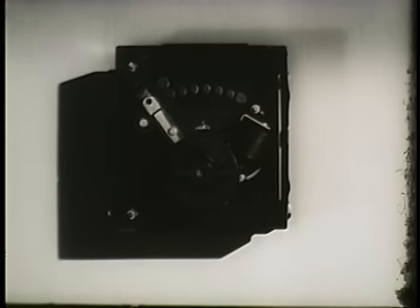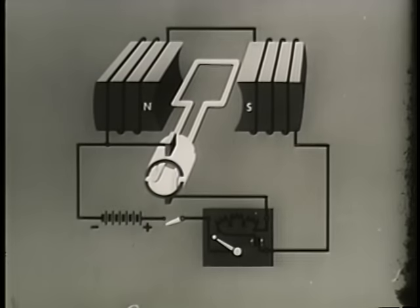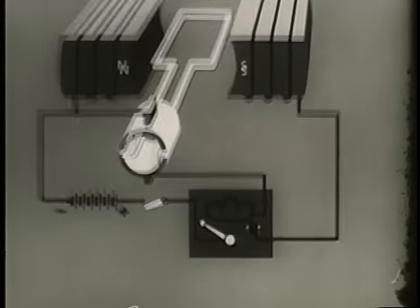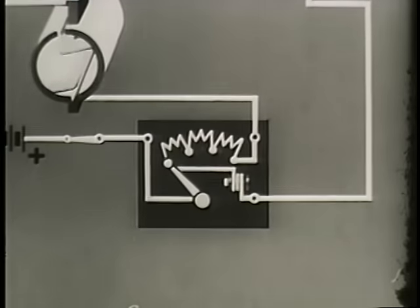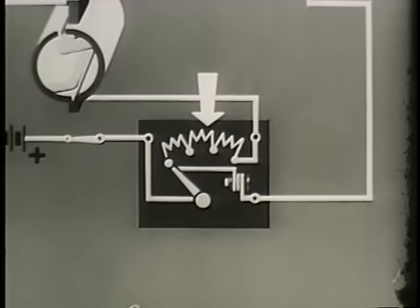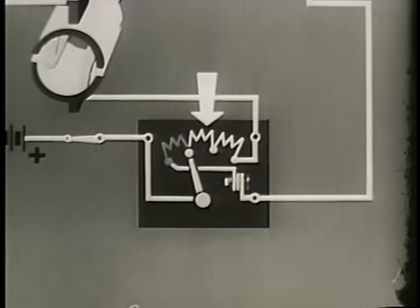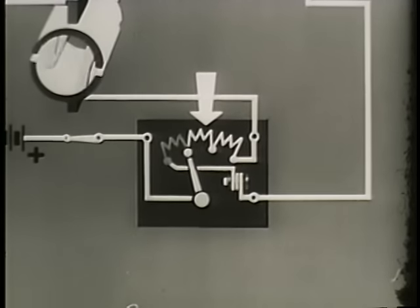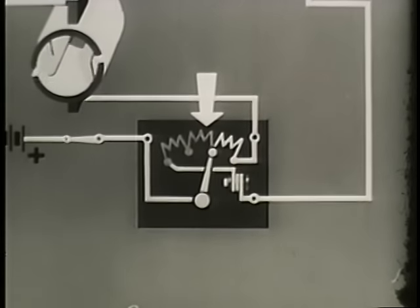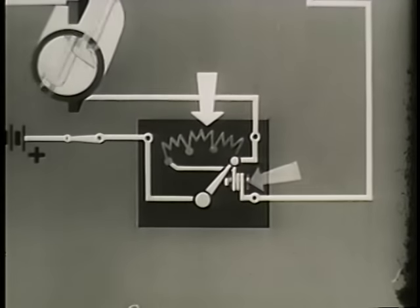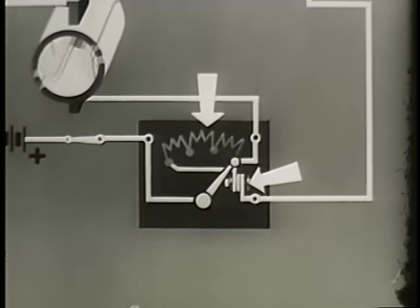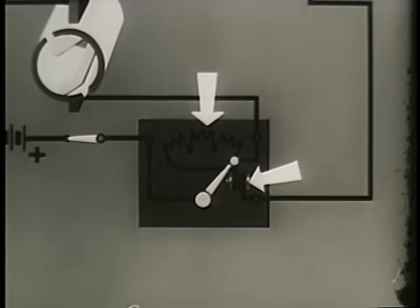Starting boxes are used with DC motors in order to avoid application of full current before the CEMF is built up. Here is a basic shunt motor with its starting box. In the starting position, the circuit to the rotor windings is closed through a series of large resistance coils. As the lever of the switch is moved, rotor speed and CEMF build up gradually and the resistance coils are subsequently cut out until running speed has been reached. The lever is held in the fully open position by an electromagnet. If for any reason the power should fail or the field coil open, the electromagnet becomes de-energized and the lever is returned to the starting position by spring action.